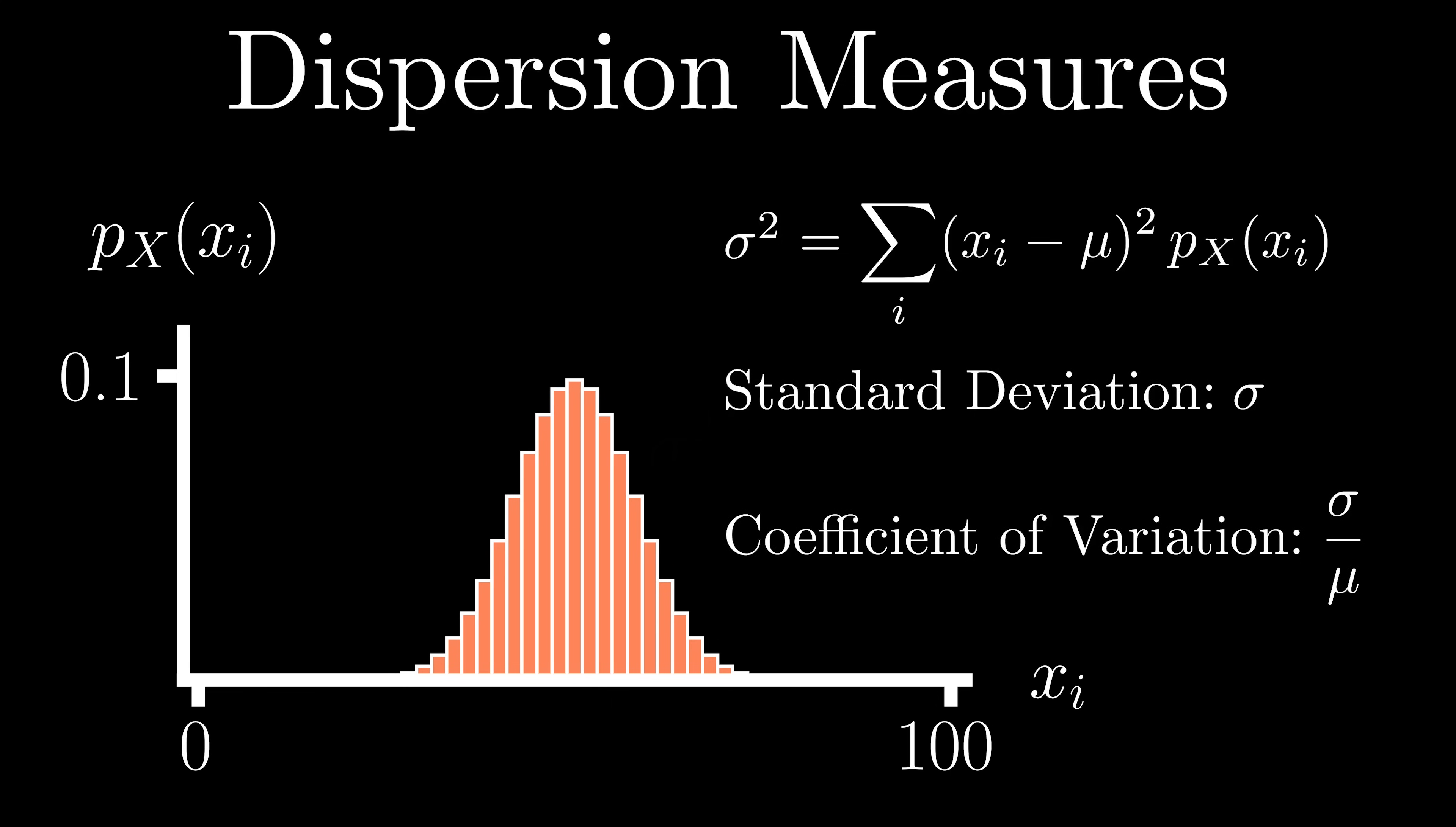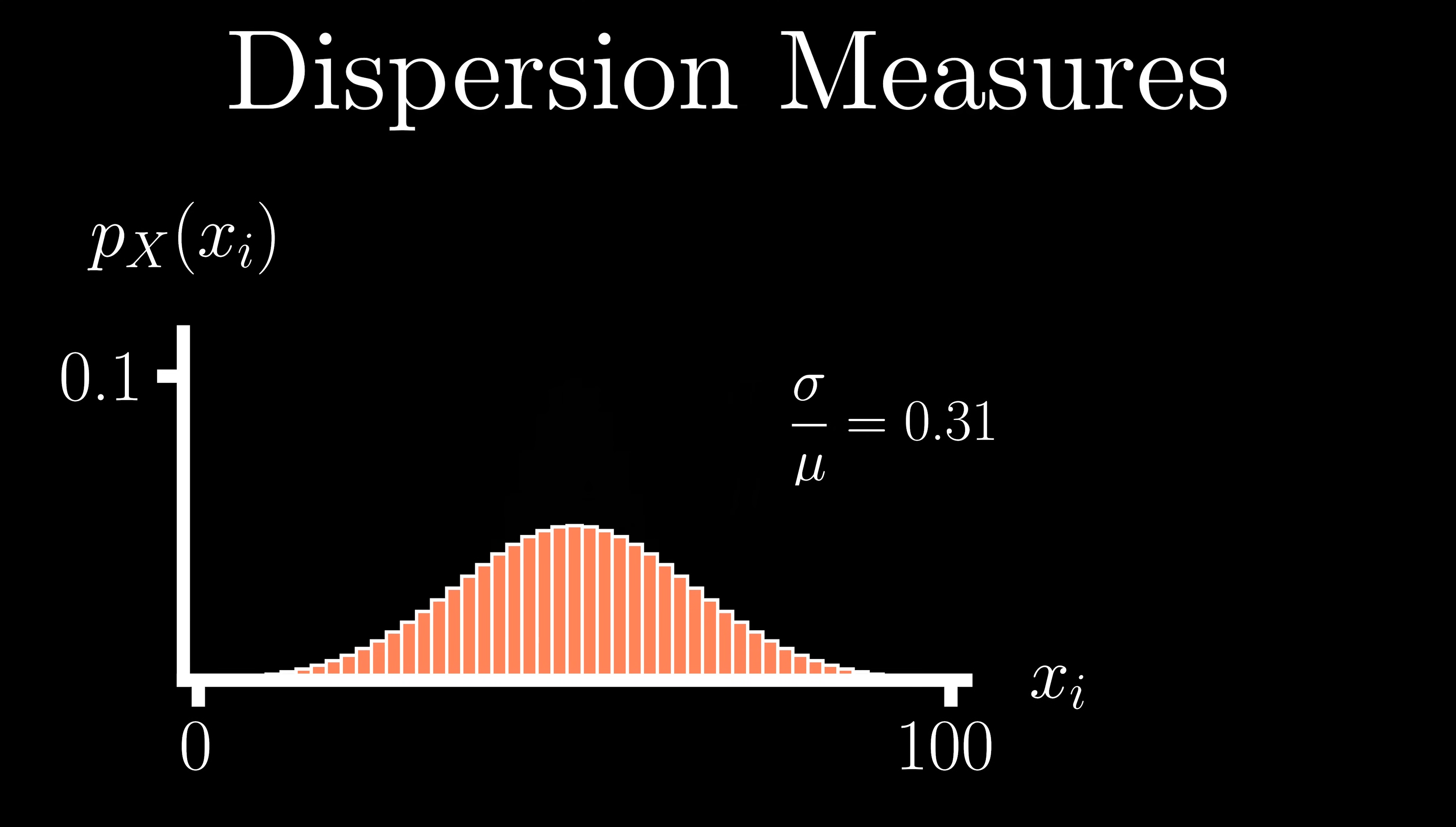In other words, we are characterizing the dispersion in our distribution relative to how much its central location deviates from zero. Through some experience, this descriptor can be quite helpful in quickly understanding both the dispersion and location of a distribution through a single measure.